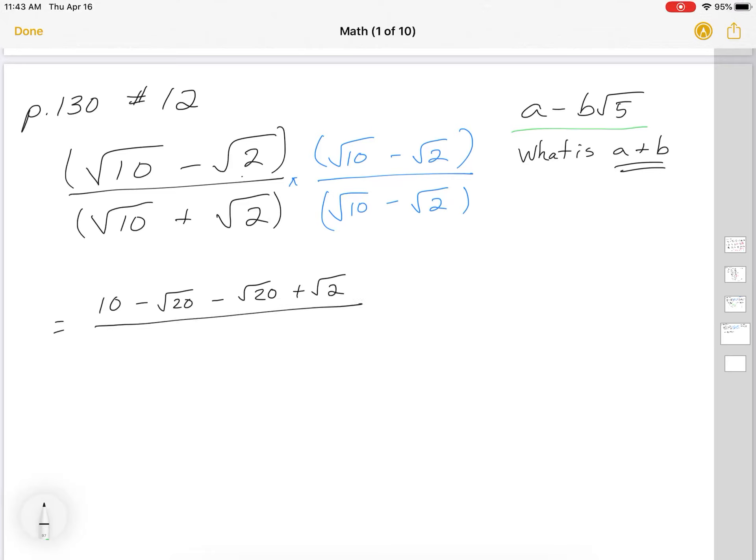Now remember, on the bottom, you basically just square each term and separate it by a minus sign. So root 10 squared is 10. Root 2 squared is 2. So we're subtracting.